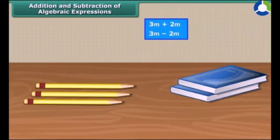First of all, we will discuss about the addition and subtraction of algebraic expression. We can only add or subtract like terms, but why is it so? For example, we have three pencils and two books. We cannot add pencils or books since they are different. So we can add or subtract only similar objects.